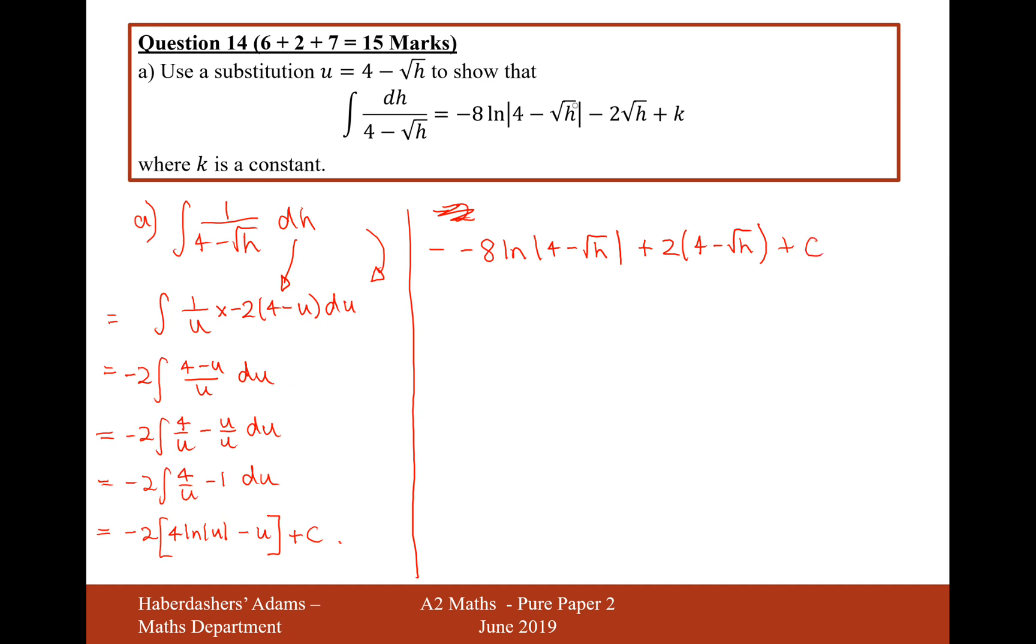Now, this isn't still quite what we've got from above. We'll have minus 8 ln modulus 4 minus root h. But what we'll do then is if we expand the brackets, so it'll be plus 8 minus 2 root h plus c. And then what we'll do with the plus c is if we group together the c and the 8 and say then that k equals c plus 8, that's still a constant. So it's going to be minus 8 ln 4 minus root h minus 2 root h plus k. That's the answer for part a then.